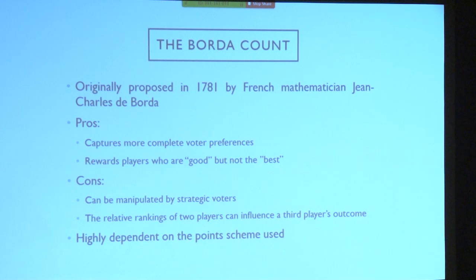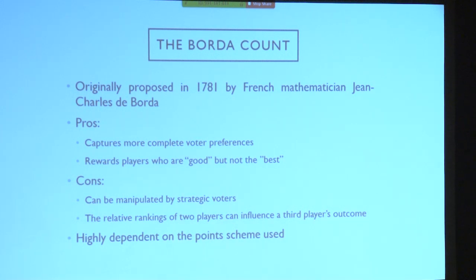There are some downsides to the Borda count — it can be manipulated. For example, in 2019 Mike Trout won the MVP for the AL. But what if one voter thought: Mike Trout's won it twice already, we should let Alex Bregman have it this time? That voter could just completely leave out Mike Trout — even if they think he's the second best in the league — just to taint his chances. So it's very manipulative, especially if there's a voter with other intentions.